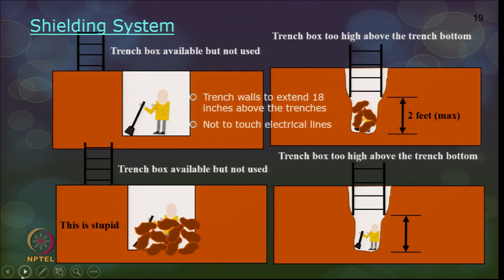Trench shields — also called trench boxes — come as boxes which are put into the excavated portion. As you start cutting the earth you put these boxes inside and the workers can start working inside these boxes.